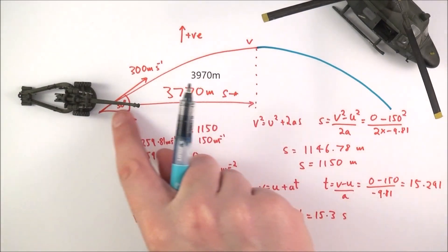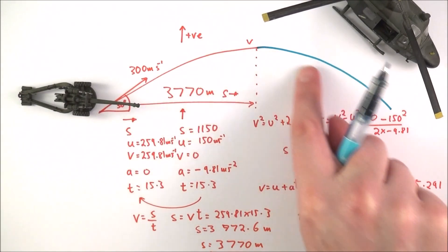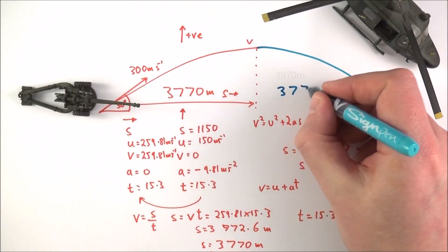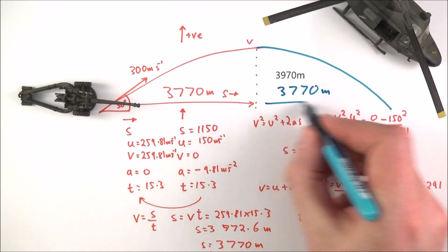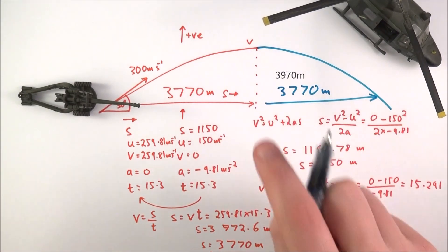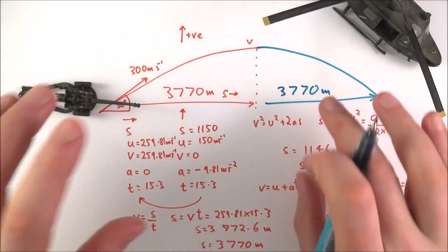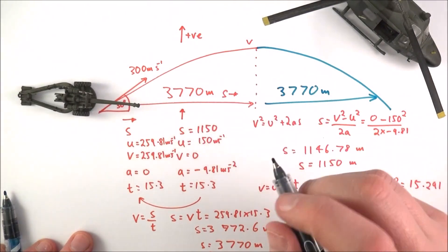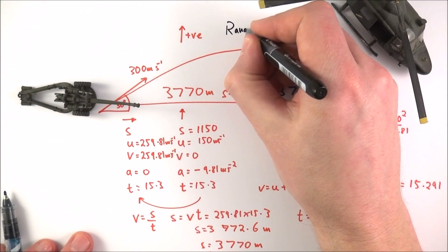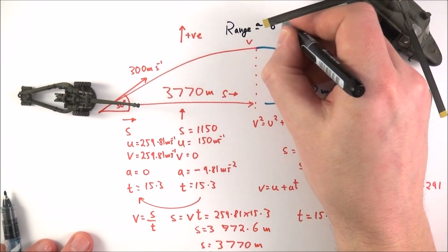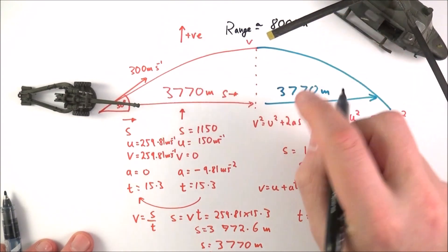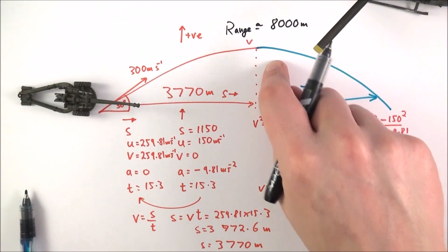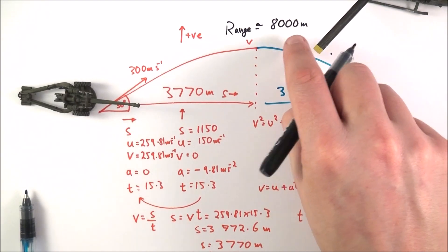If that's the distance for the first half, and it takes just as much time to go up as to come down, and it goes at the same horizontal velocity throughout because there's no drag, we know it goes about 3,770 meters on the second half of the journey as well. Overall, the range is about 8,000 meters, so eight kilometers. One of these light guns can fire to a target eight kilometers away and still hit it. In actual fact, the total range is about 17.2 kilometers.